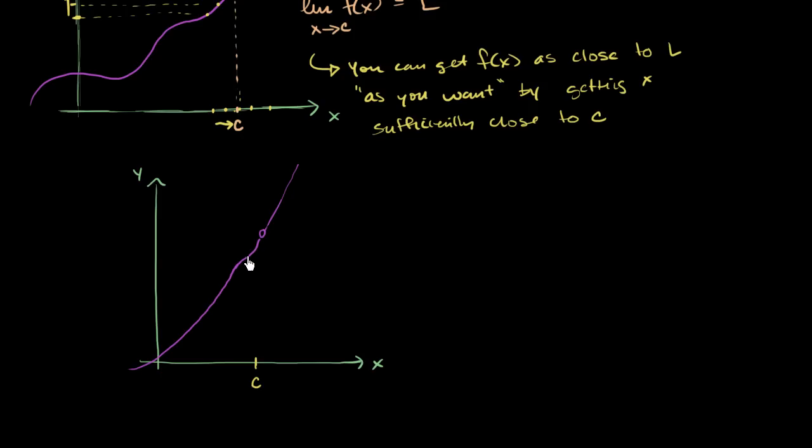And it can even have a little kink in it the way I drew it. Let me draw it a little bit different. So it is undefined when x is equal to c. So this is the point where there is a hole. It is undefined when x is equal to c, and it even has a little kink in it just like that.